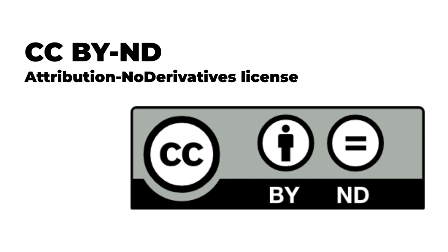The Attribution No Derivatives License, or BY-ND, allows people to use the unadapted work for any purpose as long as they give attribution to the creator. No Derivatives does not prevent someone from creating an adaptation of the work, but they may not share their adaptation with others. A No Derivatives license can be appropriate for creators who want their work widely shared but feel strongly about maintaining their work's integrity. In an academic context, some authors are uncomfortable with the idea of their work being translated into another language without their authority, though they're happy to have it read widely in the original language. A CC BY-ND license would be appropriate in this case. From the reuser's perspective, the CC BY-ND license allows for liberal reuse of a work so long as the work itself is not modified.